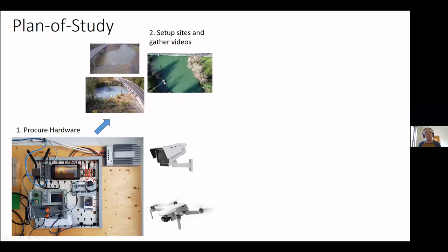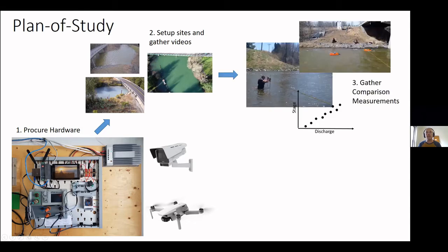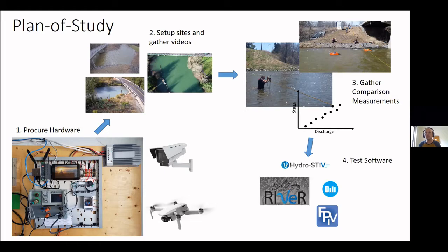The next step is to set up sites and gather videos — install ground control points, measure the cross sections, and take videos. We're getting lots of comparison measurements using ADCPs, flow trackers, and we're also trying to install our fixed camera sites at places where there's a good stable stage-discharge curve. Then the idea is to throw that into a bunch of software and see what combinations work best.